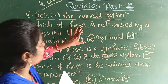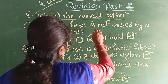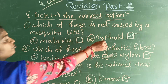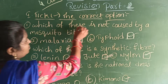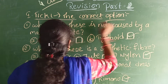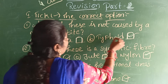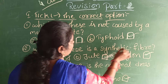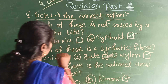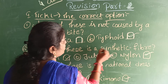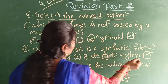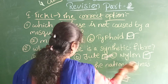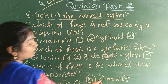So recap: First — which of these is not caused by mosquito bite? Answer: Typhoid. Second — which of these is a synthetic fiber? Answer: Nylon. Third — which of these is the national dress of Japanese? Answer: Kimono.